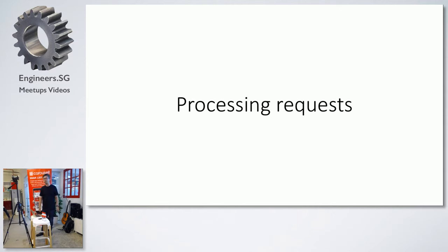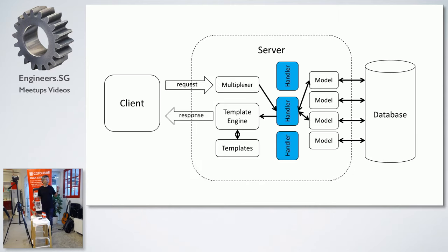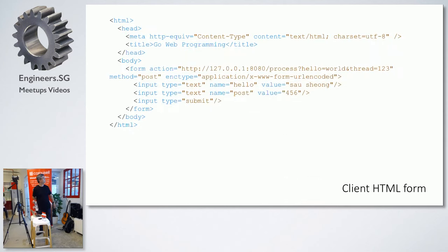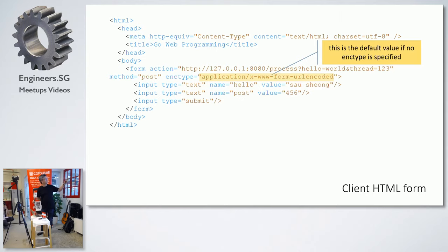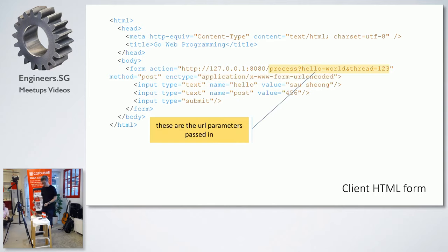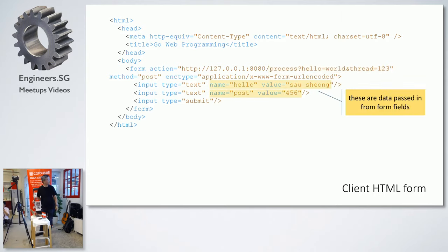Let's look at how to process requests. Here's a simple web form. Notice I'm using the default enctype — the default encryption type used with HTML forms. In the URL, I passed some parameters — normally you wouldn't do that, but I'm just showing it's possible. You'll also have some data passed from the form. So how do you get this data? You have an HTML form sending data to your server — how do you retrieve it at the server?